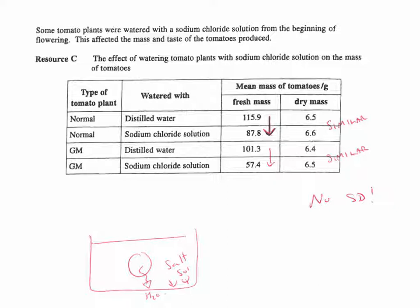So to the question, what conclusions can you make? First of all, GM have a lower fresh mass than normal. You can see here that's a lower number than that one. Watering salt solution lowers the fresh mass than both GM and normal, and we can see that there. Lastly, there's a similar dry mass for GM and normal with both types of watering, so all these numbers are similar.